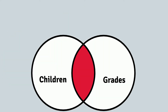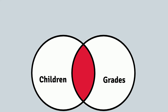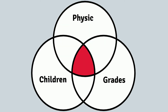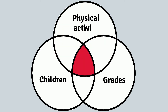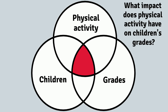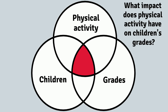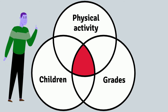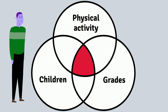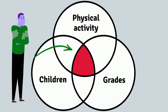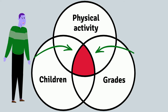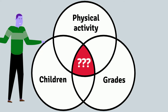Just like with OR, we can keep adding concepts with AND. We could add the words physical activity to the search for the impact physical activity has on children's grades. But every time we add another concept, the red area where all the concepts overlap gets smaller and smaller. Soon our search might have zero results — what can we do about that?